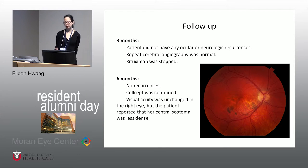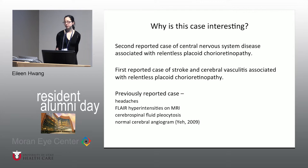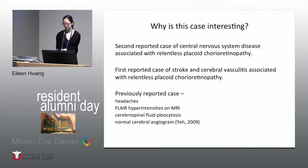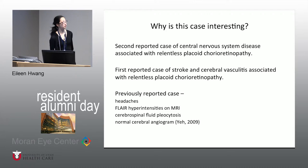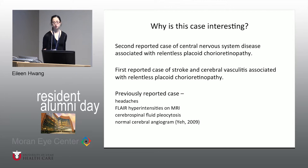Unfortunately, her visual acuity didn't get any better, but she said her central scotoma was subjectively less dark. This case is important because it's one of those diseases that could kill the patient — one we could potentially pick up by seeing a patient in the office when they present acutely. Relentless placoid chorio-retinopathy has only been reported in association with central nervous system disease one previous time, and this is the first time a patient with this condition has had a stroke with proof of cerebral vasculitis on angiography.